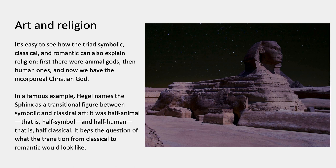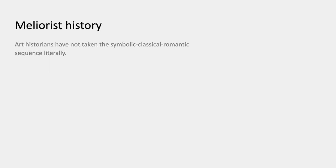It's a kind of unforgettable example of the theory. It also begs the question of what the transition from classical to Romantic would look like — that would be something half human, half landscape, half natural form, half human form. That's a missing example, I suppose.